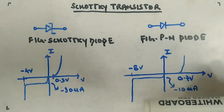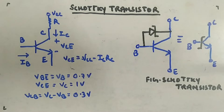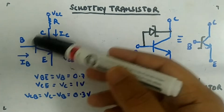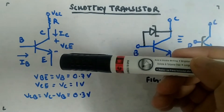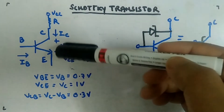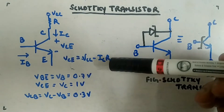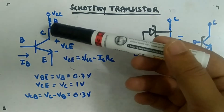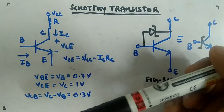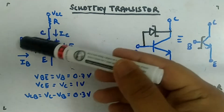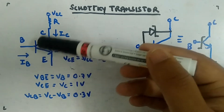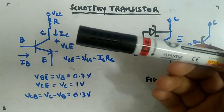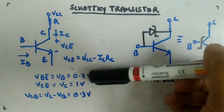Now let's look at the Schottky transistor. This is the normal transistor — you have seen it before. If you increase the value of IB, IC increases, meaning the voltage drop across the resistance will increase. So VCC minus the drop across R gives you VCE. As you increase IC, the drop increases and hence you get less VCE. As you keep increasing IB, VCE will decrease until the CB junction becomes forward biased — that is how saturation is achieved.